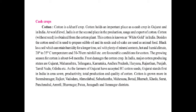In India, major cotton producing states are Gujarat, Maharashtra, Telangana, Karnataka, Andhra Pradesh, Haryana, Rajasthan, Punjab, Tamil Nadu, and Odisha. As farmers of Gujarat have accepted Bt cotton seeds, Gujarat stands first in India in area sown, productivity, total production, and quality of cotton. Cotton is grown more in Surendranagar, Rajkot, Vadodara, Ahmedabad, Sabarkantha, Mahasana, Botad, Bharuch, Kheda, Surat, Panchmahal, Amreli, Bhavnagar, Patan, Junagadh, and Jamnagar districts. Cotton is a very valuable cash crop with good demand in the market, which is why it is also known as white gold.